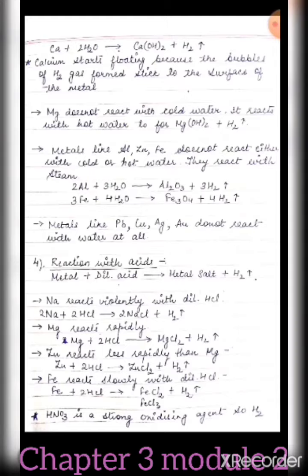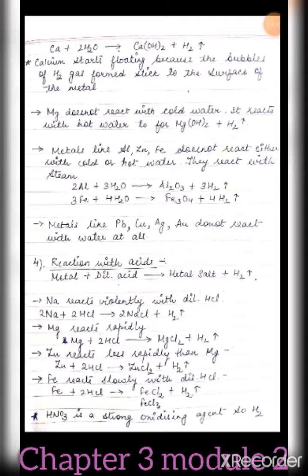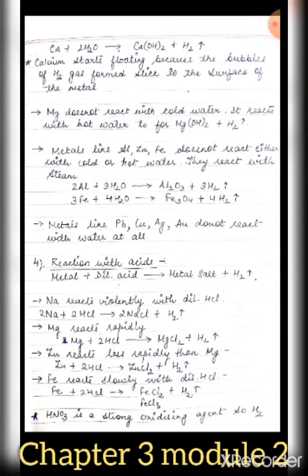The next reaction is the reaction with acids. When a metal reacts with dilute acid it forms a metal salt plus hydrogen gas. Sodium and potassium react very violently with dilute hydrochloric acid, evolving hydrogen gas. K + HCl gives KCl + H2, and Na + HCl gives NaCl + H2.